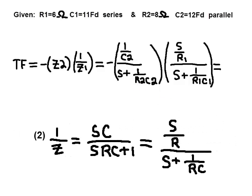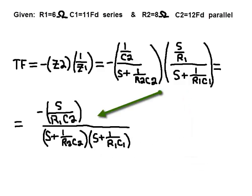Equation 2 can be used for 1 over Z1. Multiply the numerators.